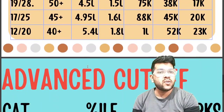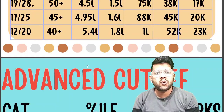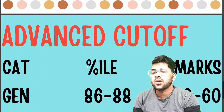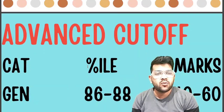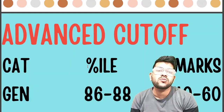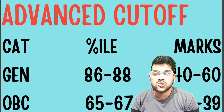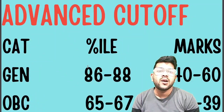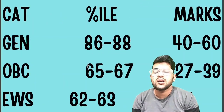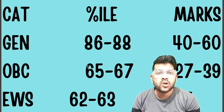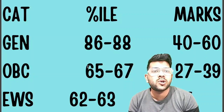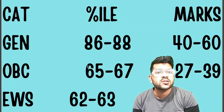Now let's discuss the JEE Advanced cutoff data. For General category, 86 to 88 percentile is required for qualification, and marks requirement will be 40 to 60 marks. For OBC, 65 to 67 percentile is required and marks will be 27 to 39. For EWS, 62 to 63 percentile is required and marks required will be 25 to 37. Marks will change depending on the difficulty of the paper, but percentile will remain fixed unless there is a huge change in the number of students.